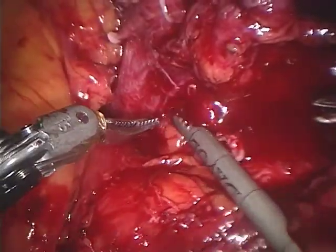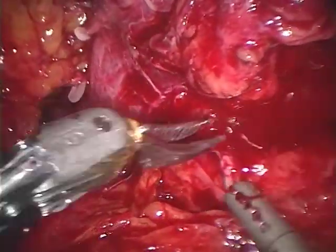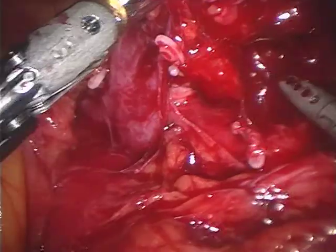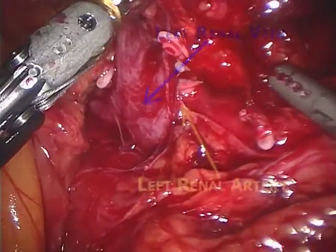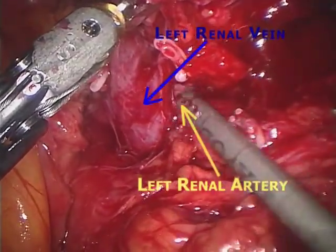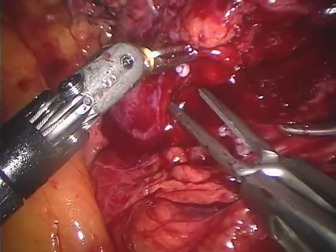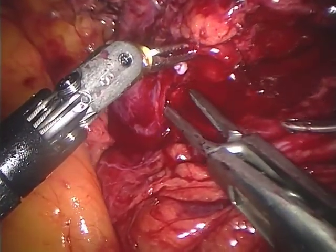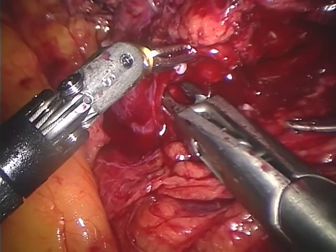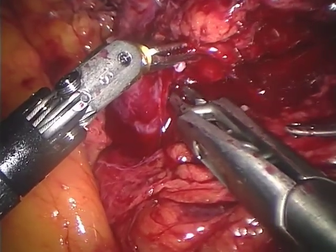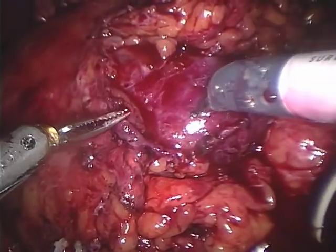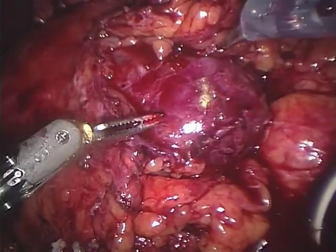Now the hilum is dissected from all surrounding structures. Here you see the renal artery, just posterior to the left renal vein. The artery is being clamped in preparation for the lower pole amputation. Prior to clamping the artery, an ultrasound probe was used to identify the level of the lower pole calyx.